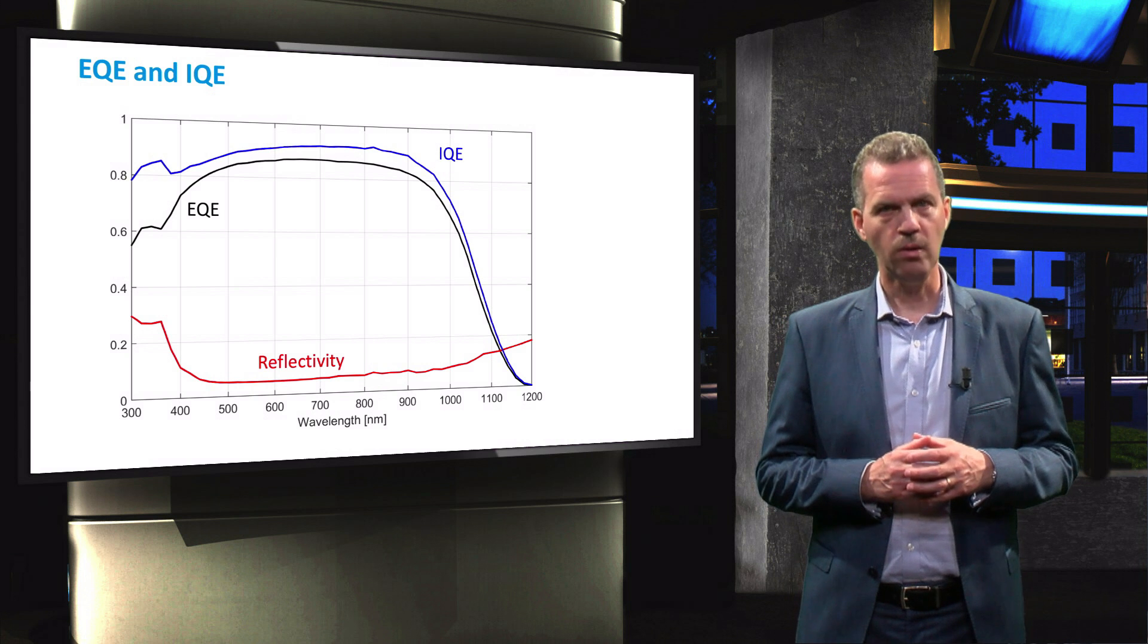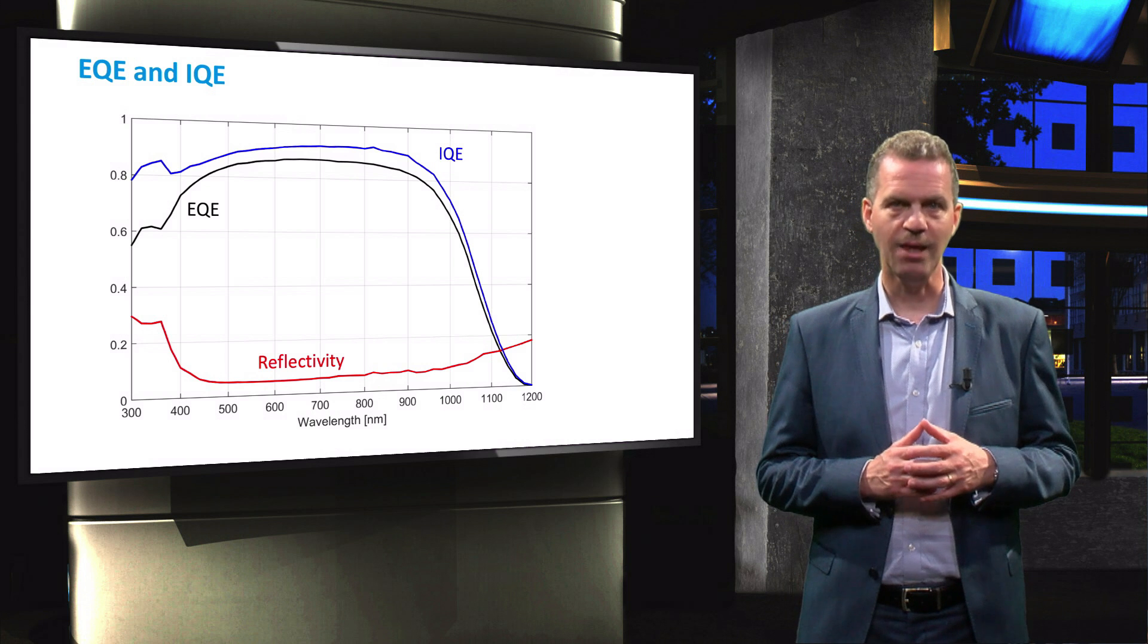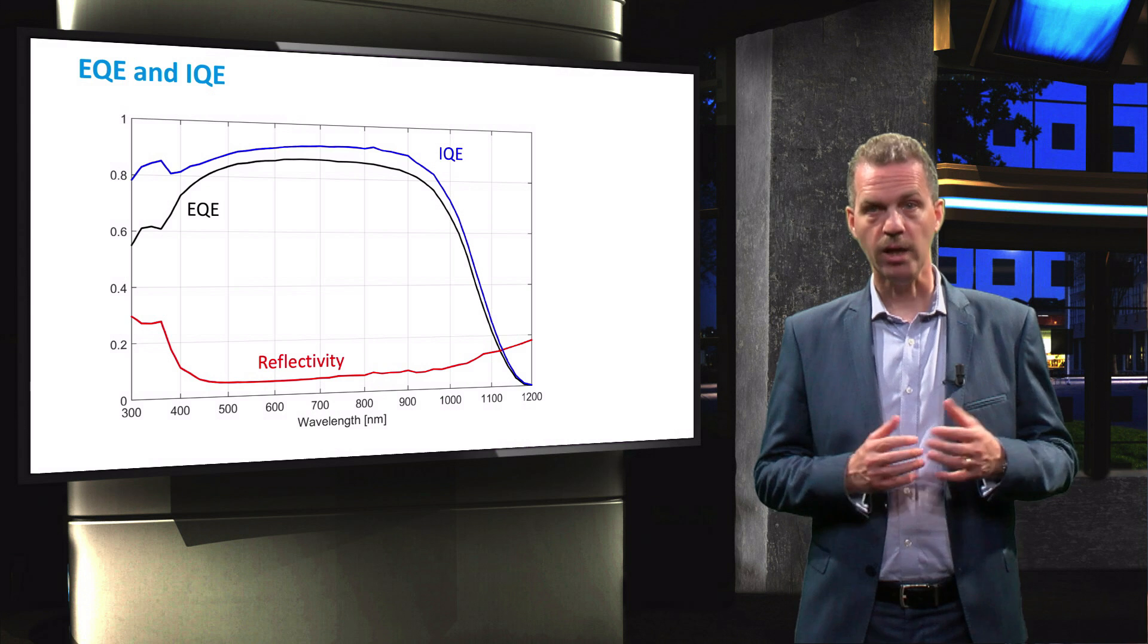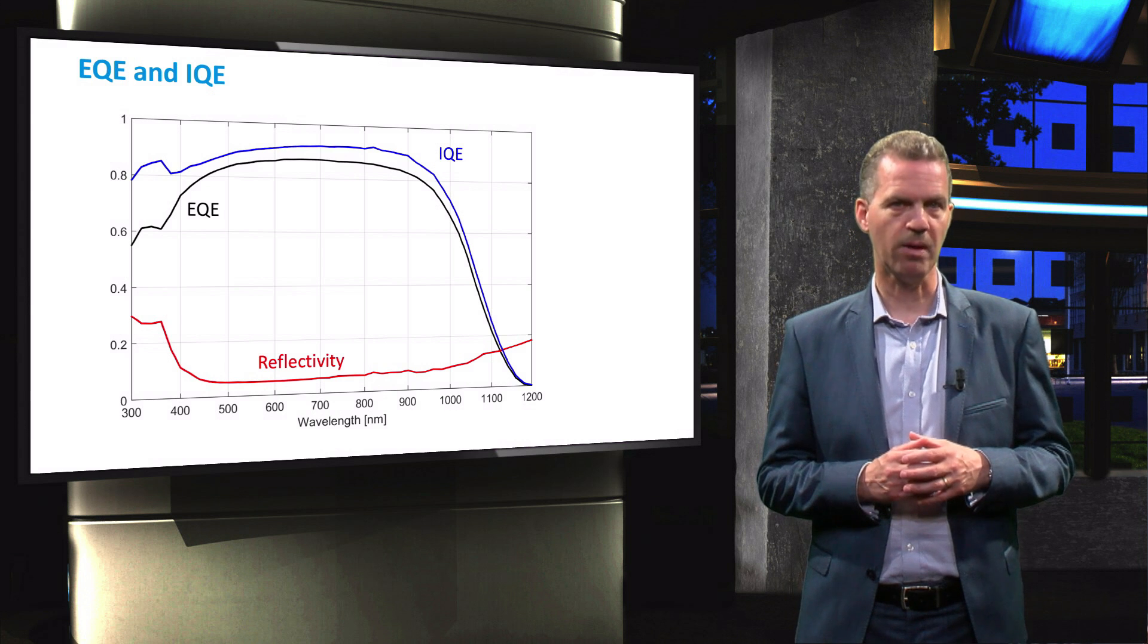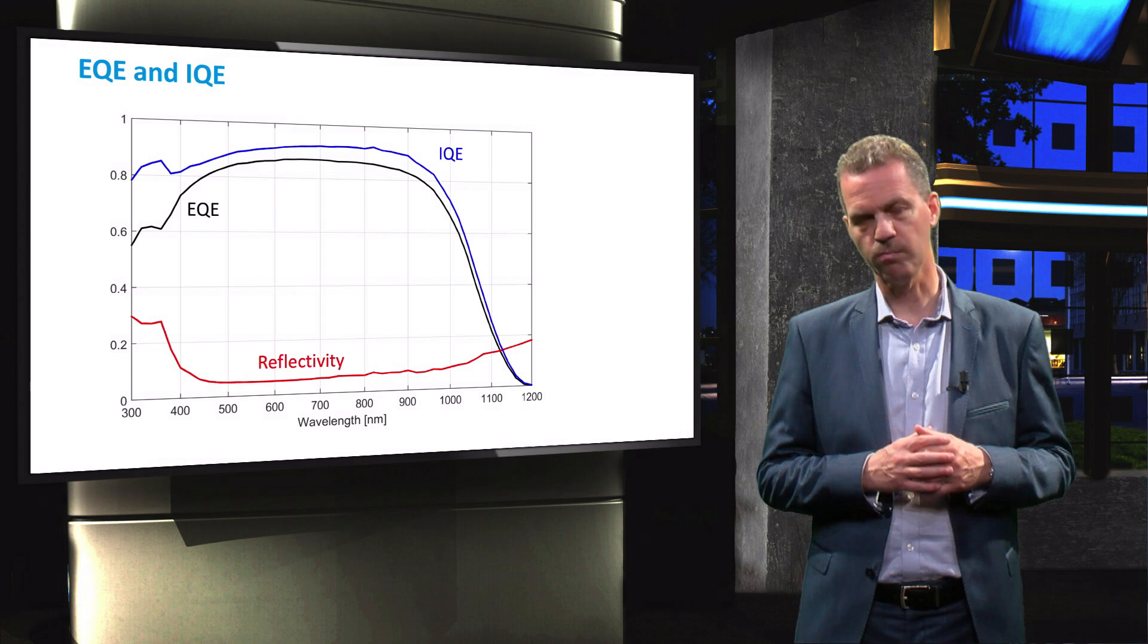If we then only look at the fraction of photons absorbed in the cell, we arrive at the Internal Quantum Efficiency or IQE. The IQE can clearly show which wavelengths of light are lost by parasitic absorption, or where charge carrier collection problems might be present.